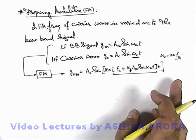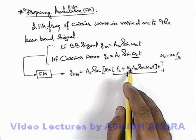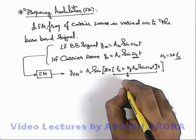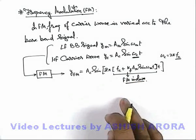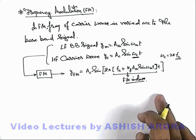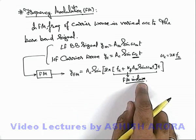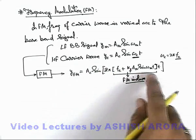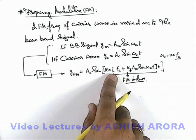The parameter k_f is the proportionality constant used for the baseband signal to be added with the frequency, and for unit matching. It is called the frequency modulation index. Just as we defined the amplitude modulation index as the ratio of amplitudes of baseband signal to that of the carrier wave, the FM index k_f, when multiplied with the displacement of the baseband signal, gives a frequency that varies with the baseband signal added to the carrier frequency.